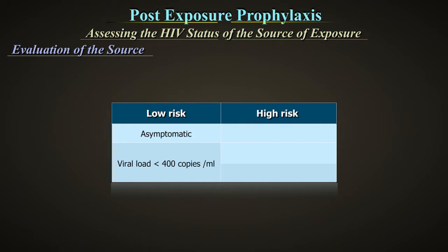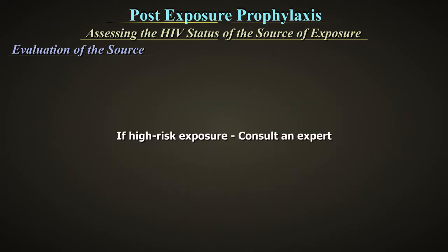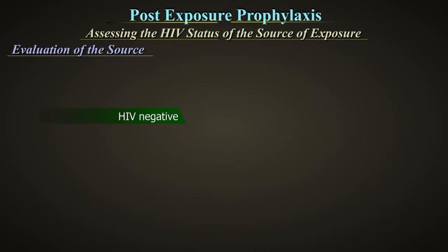High risk: symptomatic, with opportunistic infections or AIDS, acute seroconversion, or high viral load. In the case of high risk exposure from a source patient on ARTs, consult an expert to choose an appropriate PEP regimen, especially if drug resistance is suspected. If the source is HIV negative, consider HBV and HCV. If HIV positive and clinically asymptomatic, this represents a low risk source.